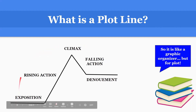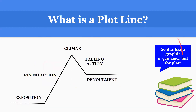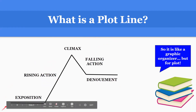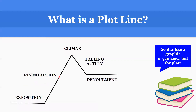So here are all these terms together. This is a plot line — it is like a graphic organizer, but for plot. To help you remember, it kind of looks like a mountain. The story starts with the exposition, then the rising action, then the climax, the falling action, and the denouement.